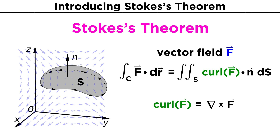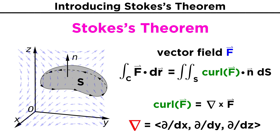Remember that the curl of a vector field is calculated by taking del cross F, where del was the vector (d/dx, d/dy, d/dz). While we can use Stokes' Theorem to calculate the line integrals, it can also be used in reverse if we want to find the surface integral of a curl, and the boundary is simple enough to calculate.